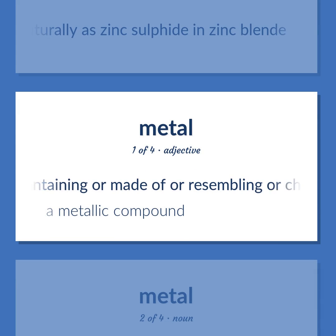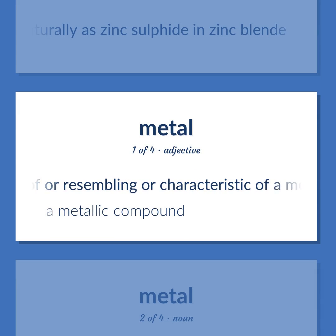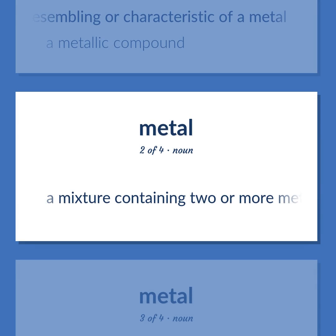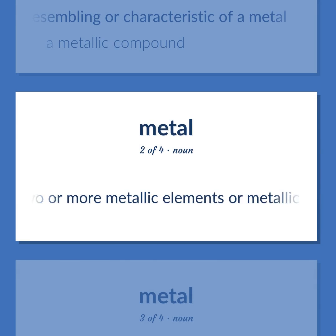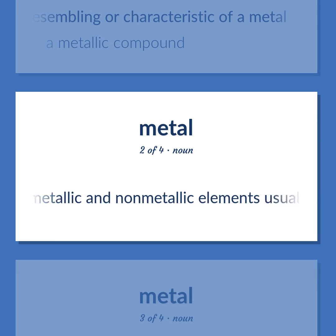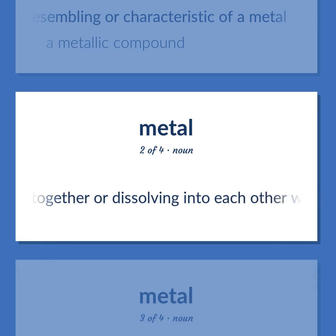Metallic: Containing or made of or resembling or characteristic of a metal. A metallic compound. Alloy: A mixture containing two or more metallic elements, or metallic and non-metallic elements, usually fused together or dissolving into each other when molten.